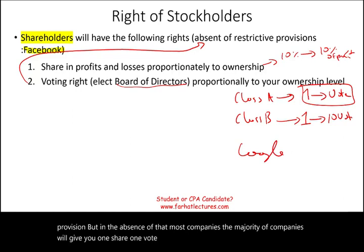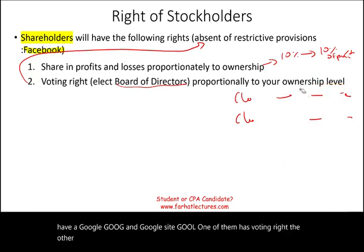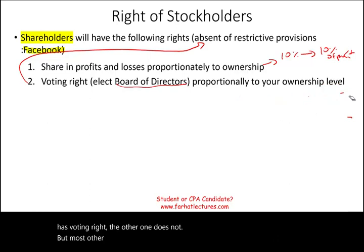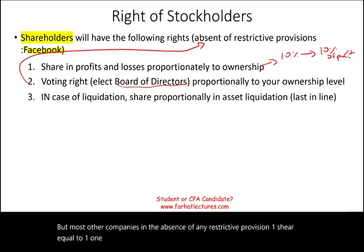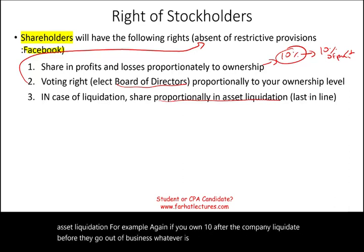Google has another structure — GOOG and GOOGL — where one has voting rights and the other does not. But for most companies, absent any restrictive provision, one share equals one vote. Also, in case of liquidation, you share proportionally in the asset liquidation. If you own 10%, after the company liquidates, whatever is left, you'll get 10% — though bear in mind you are last in line, so oftentimes there's nothing left.